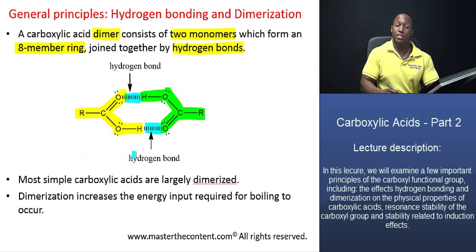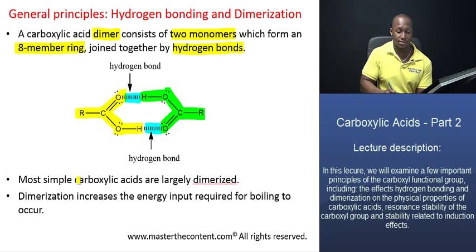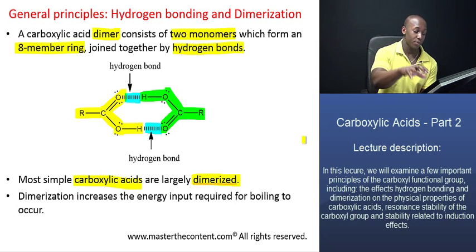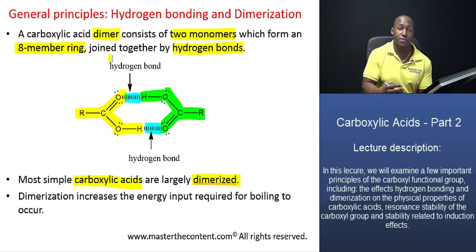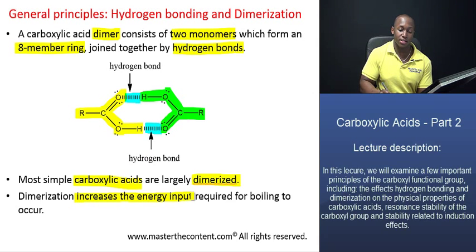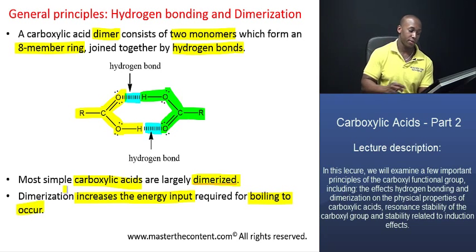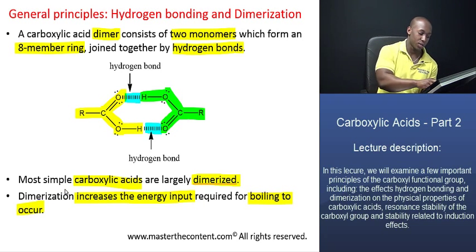Those two are joined together by two hydrogen bonds. So in actual fact, most simple carboxylic acids are largely dimerized — they exist for the most part in that form. So what does dimerization do as far as the physical properties of acids are concerned? It actually increases the energy input that is required for boiling and vaporization to occur.